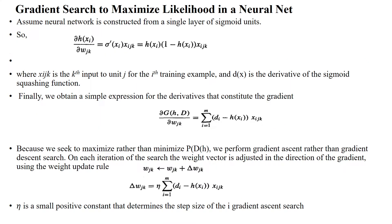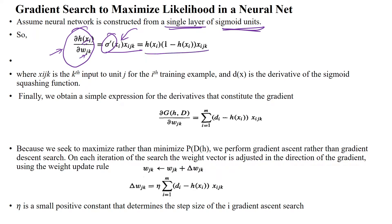Assume the neural network is constructed from a single layer of sigmoid units with a sigmoid activation function. Then we can say the partial derivative of predicted output with respect to weights equals the sigmoid function of the respective sample. We can then write the equation as: predicted output times (1 minus predicted output) with respect to the sample — this is the partial derivative used to update parameter w.